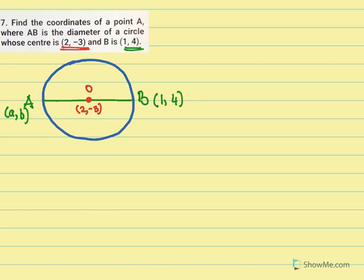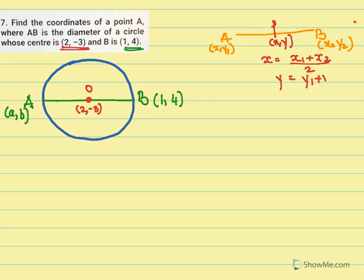Before we solve this problem, let's revise the midpoint formula. If we have segment AB where this is (x1, y1) and this is (x2, y2), and its midpoint P is (x, y), then x = (x1 + x2)/2 and y = (y1 + y2)/2. This formula is only used when P is the midpoint, meaning P divides AB into two equal parts in the ratio 1:1.